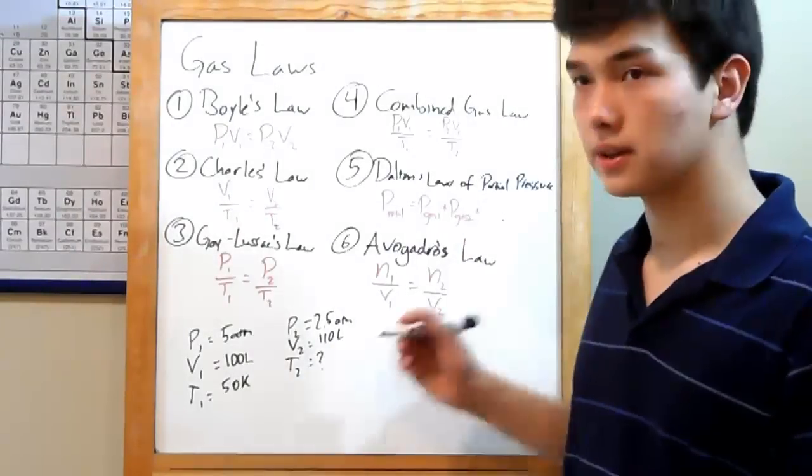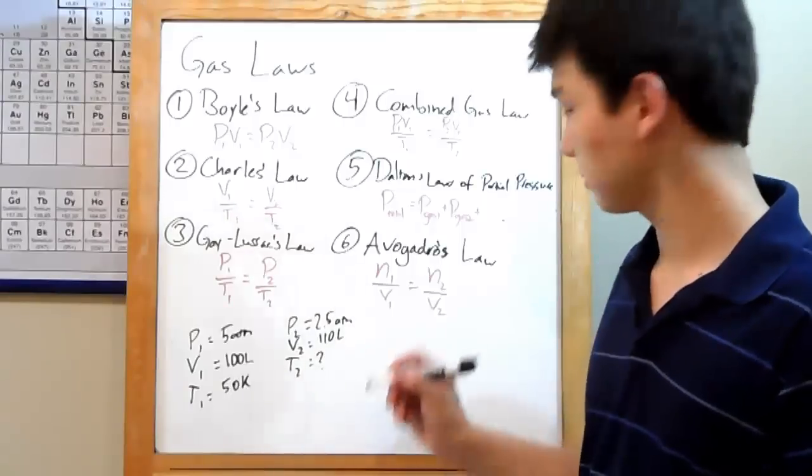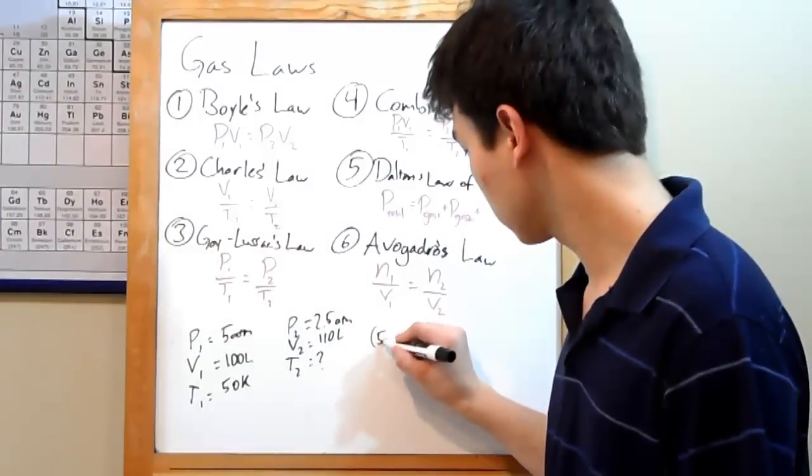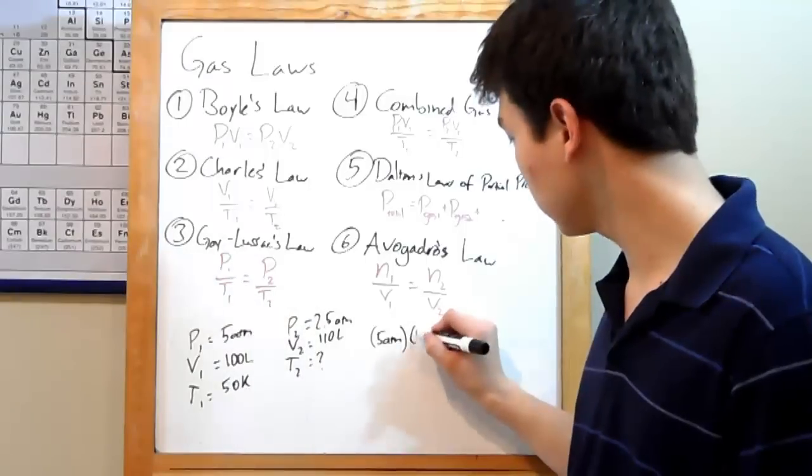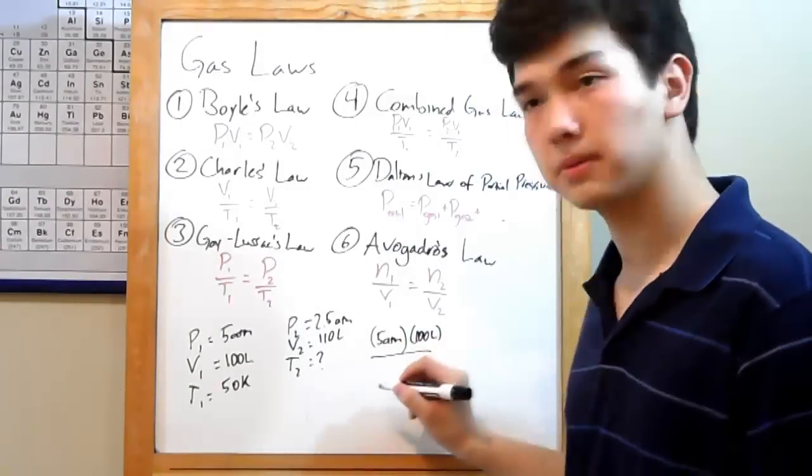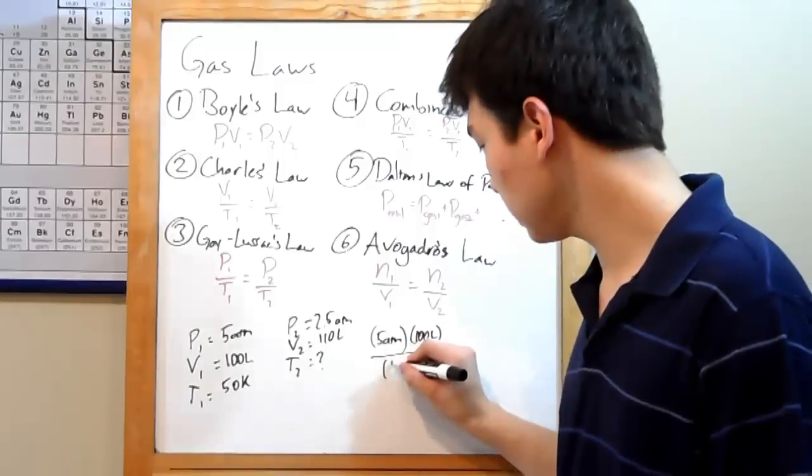So pull it down. Your initial pressure is 5 atmospheres, P1. Your initial volume, 100 liters, V1. And your initial temperature is 50 kelvins, T1.